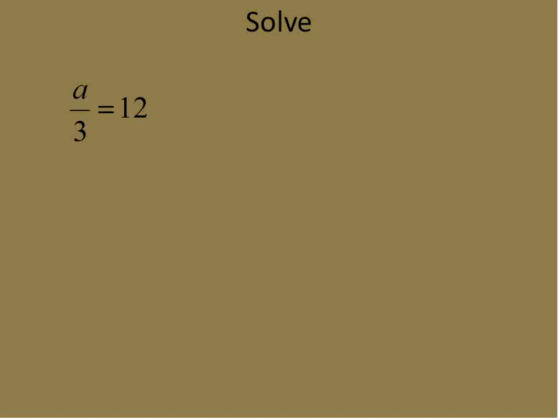Here's one with division. This says a divided by 3 is equal to 12. The inverse operation for isolating the variable a is to use the opposite of dividing. Since a is divided by 3, we multiply times 3.